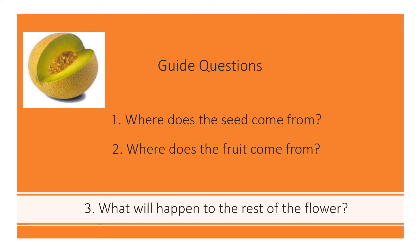Now it's time to answer. So the first, where does the seed come from? It is coming from the ovium because it is where fertilization occurs.